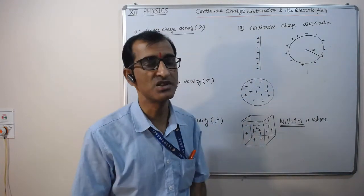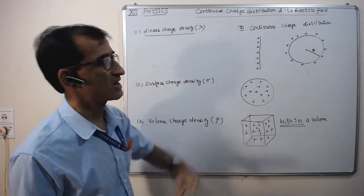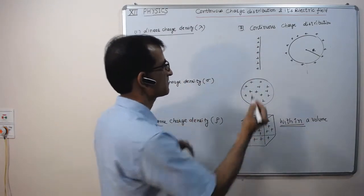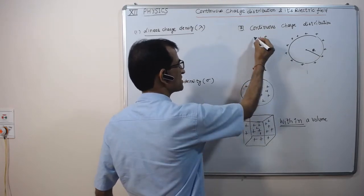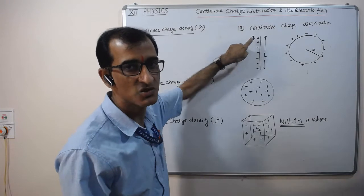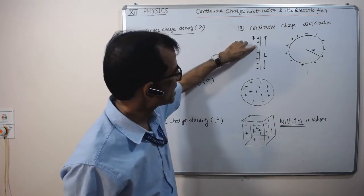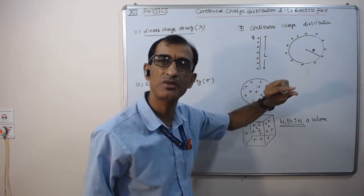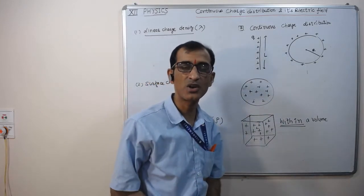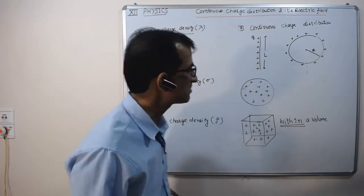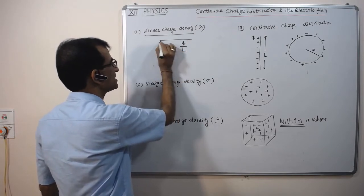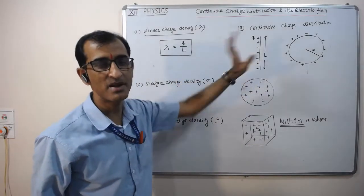First, we define the three types of charge densities. Number one is linear charge density, which means charge per unit length — that is, coulombs per meter. If a wire of length L carries total charge Q, then linear charge density lambda equals Q divided by L. For example, if a wire has circumference 2πR and total charge Q, then lambda equals Q divided by 2πR.